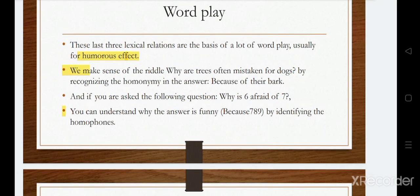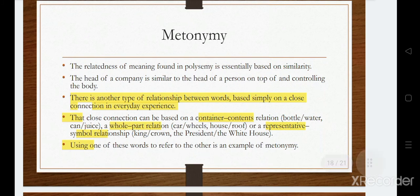Now we'll see word play. This is a lexical relation usually used for humorous or comic effect. For example: why is a tree often mistaken for a dog? Because of the bark — a dog barks and a tree has bark, which is the outer stem. Another example: why is six afraid of seven? Because seven 'ate' nine — here 'ate' is a homophone of 'eight,' so the word play is based on identifying homophones.